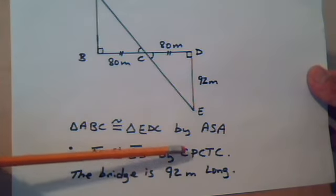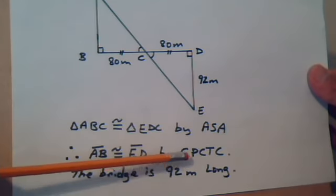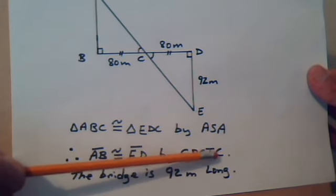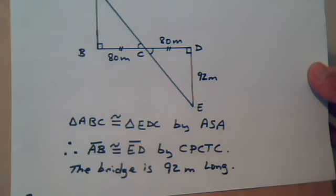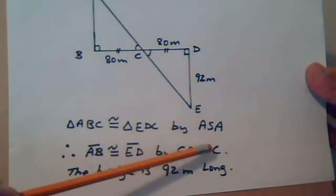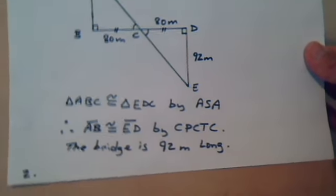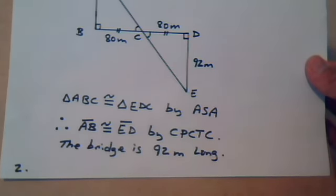Notice we use CPCTC, congruent parts of congruent triangles are congruent. That's what we're saying, that matching parts are congruent. So congruent parts of congruent triangles are congruent. So the bridge is 92 meters long.